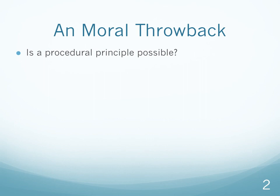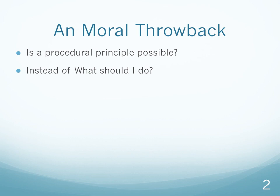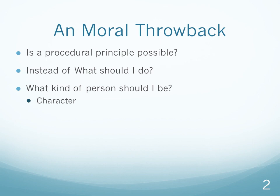Both Mill and Kant were after what we called a procedural principle — whether it be the principle of utility or the categorical imperative. These are moral principles that help us figure out what we should do whenever we face a moral dilemma: some systematic mechanism to figure out right and wrong. A procedural principle answers the question 'what should I do?' Aristotle was less interested in that and more interested in 'what kind of person should I be?' — focusing on character traits instead of a be-all-end-all procedural principle.